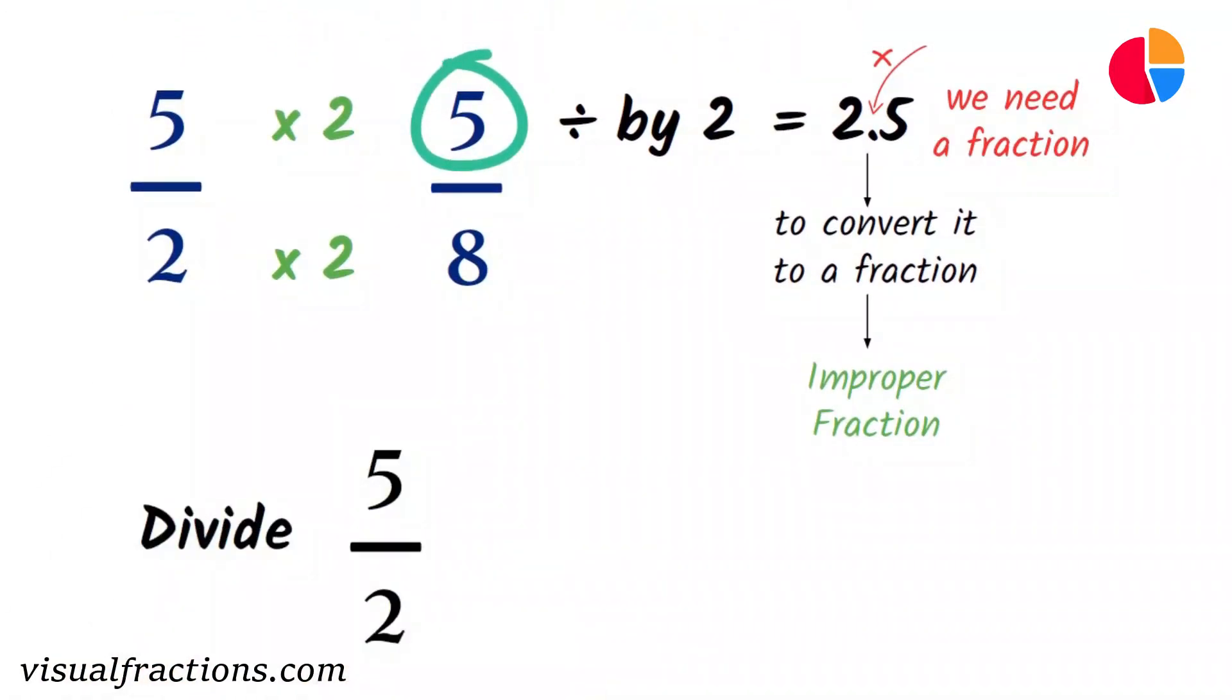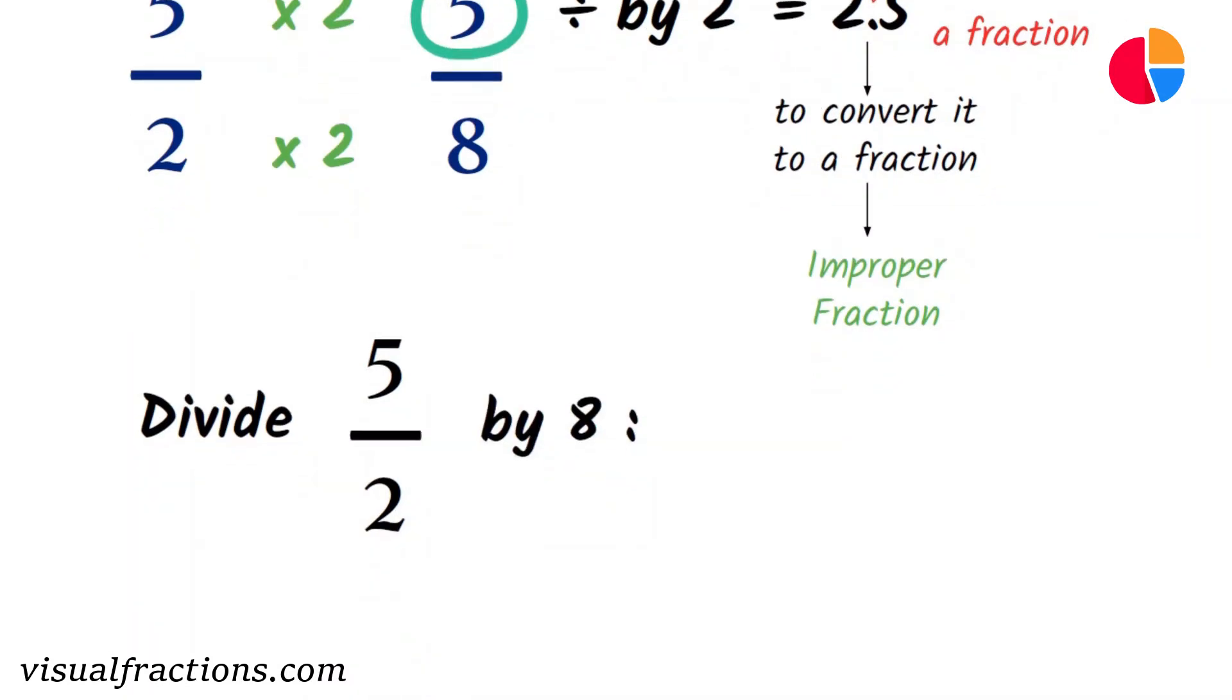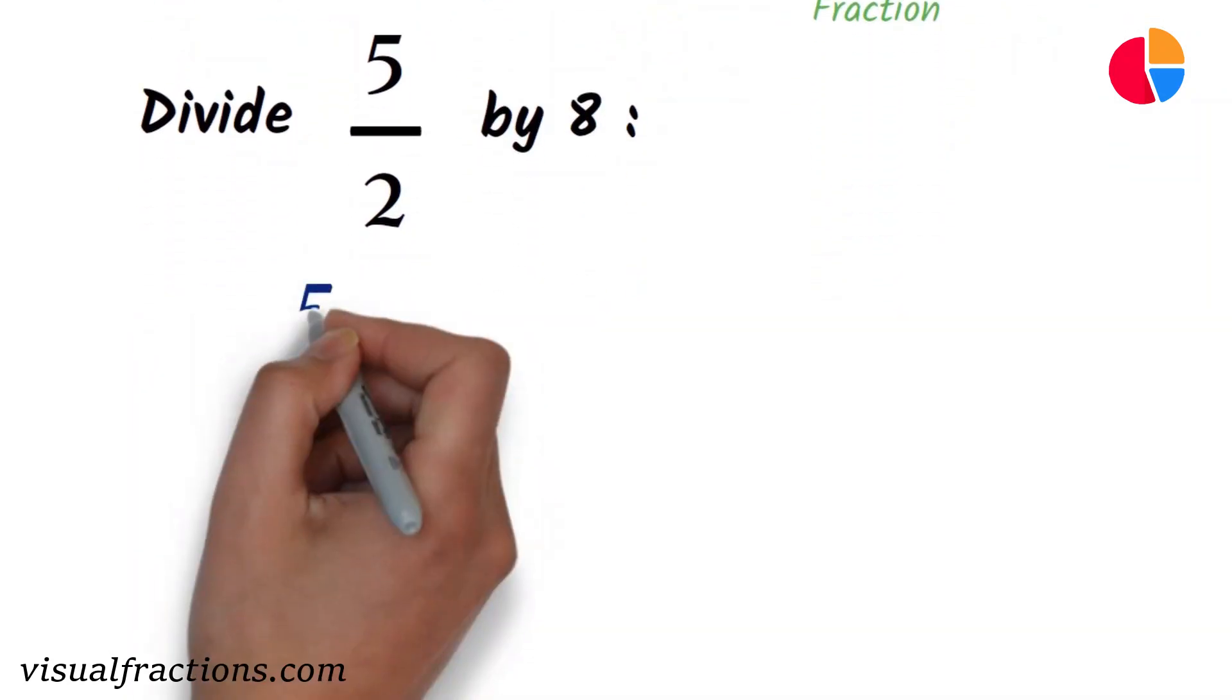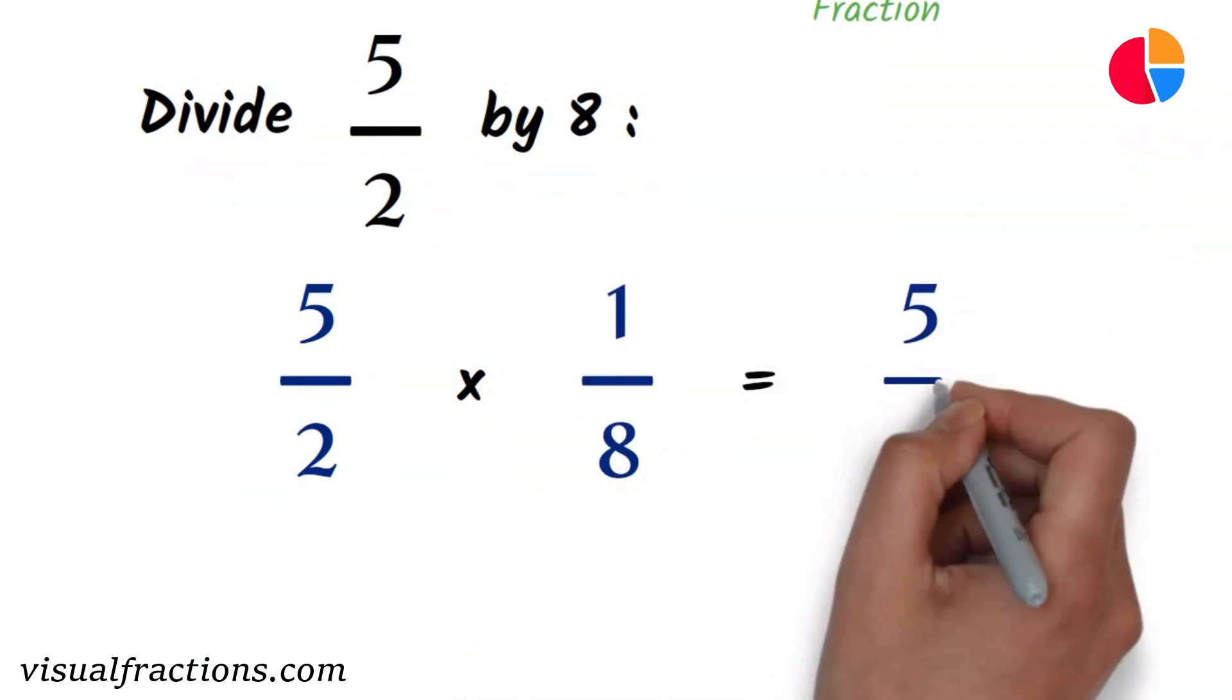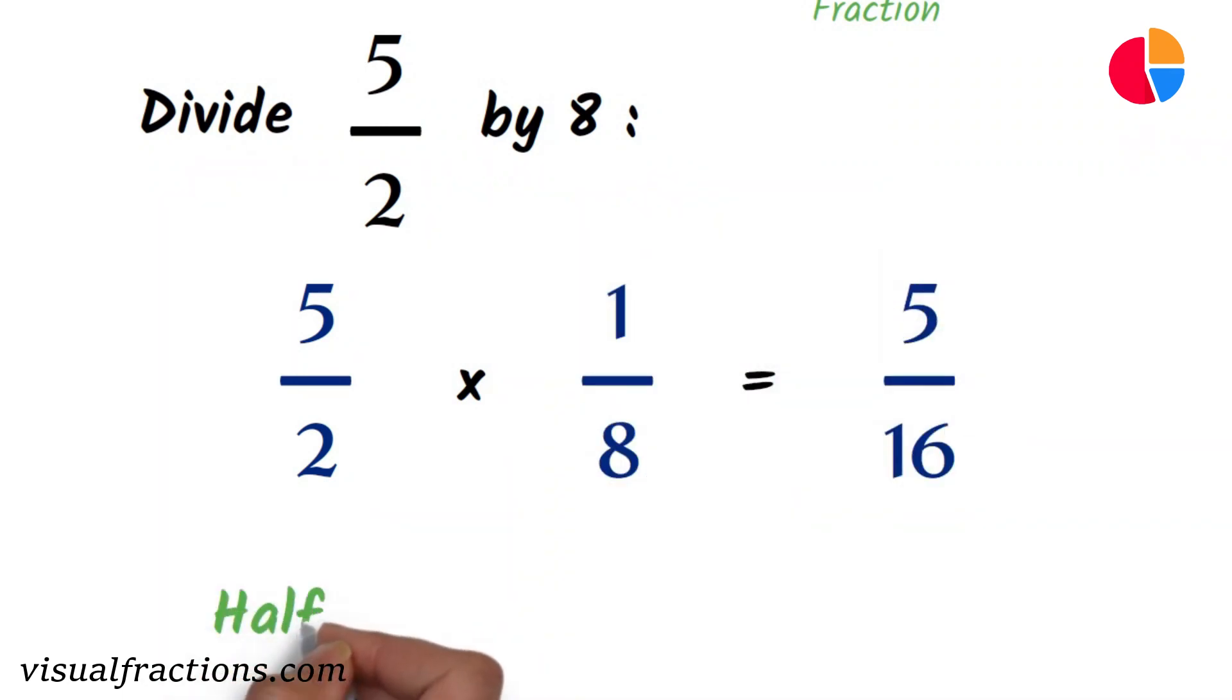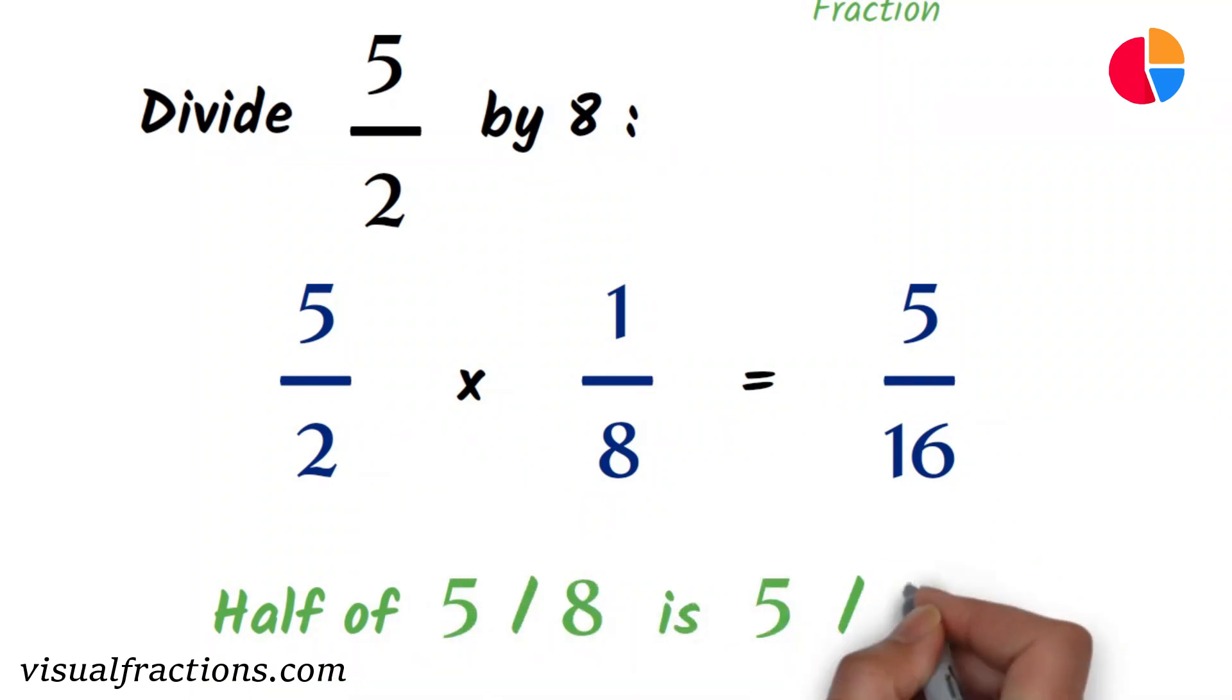Next, we need to divide 5 halves by 8 to get half of 5 eighths as a fraction. We do this by multiplying 5 halves by 1 eighth, which gives us 5 sixteenths. Therefore, half of 5 eighths is 5 sixteenths.